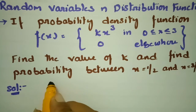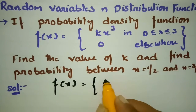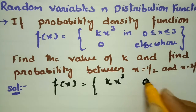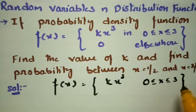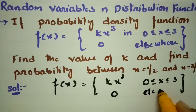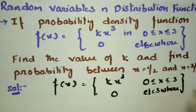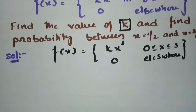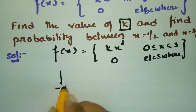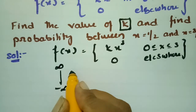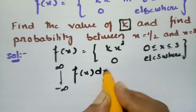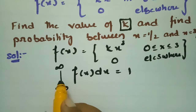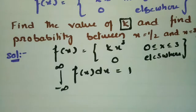The probability density function is given as f(x) = k·x³ where x lies between 0 and 3, and 0 elsewhere. To find the value of k, we use the fact that the integral from minus infinity to plus infinity of f(x) dx equals 1 — the total probability equals unity. We insert the limits 0 and 3.